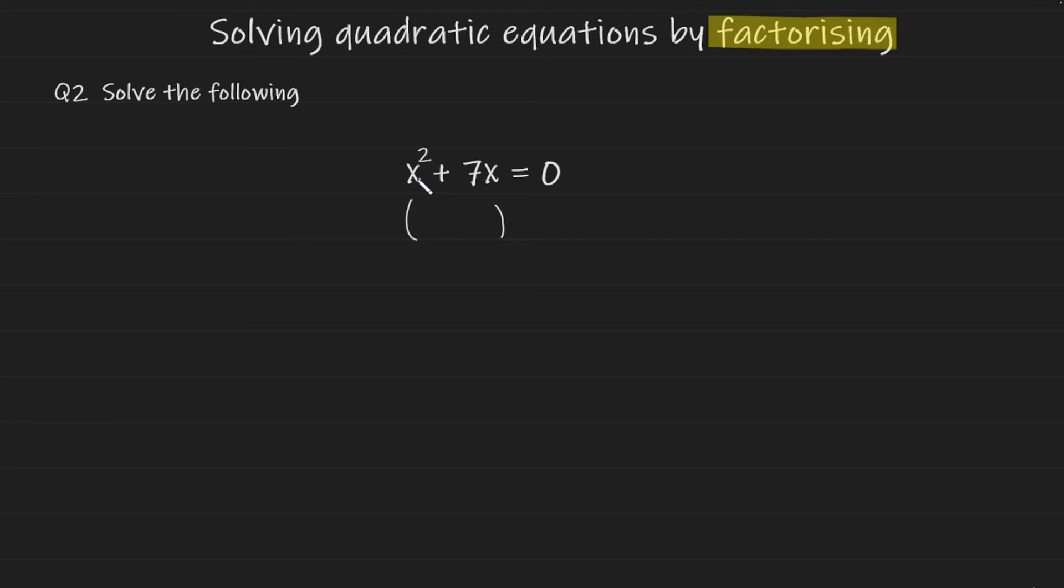Now we can take out the common factors. In this case the common factor in both terms is an x and we are left with x plus 7. And this is equal to 0.